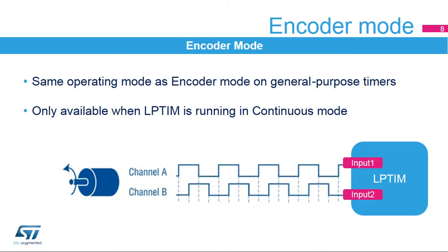The low-power timer features an encoder mode function that can interface with incremental quadrature encoder sensors using the peripheral's INPUT-1 and INPUT-2 inputs. Both inputs feature glitch-filtering circuitry. The encoder function is similar to the one embedded in the general-purpose timers. In order to use the encoder mode function, the low-power timer must be running in continuous mode. Only low-power timers 1 and 2 embed the encoder mode function.